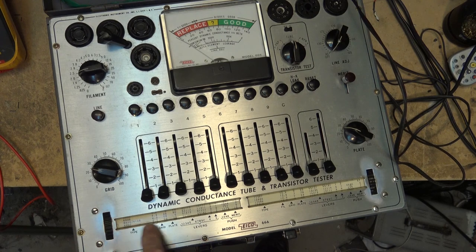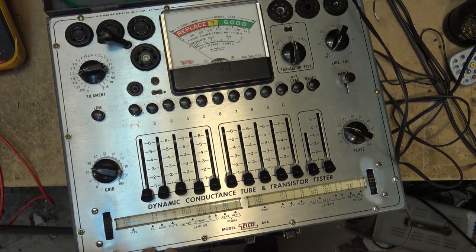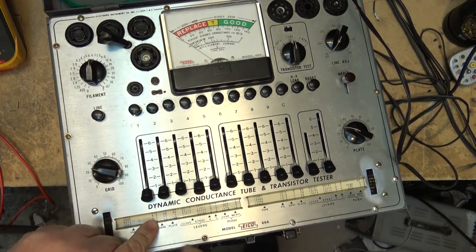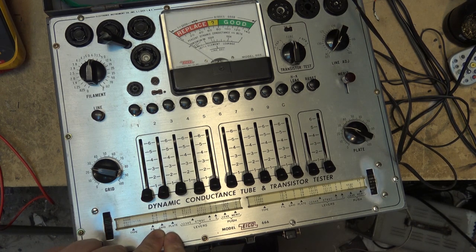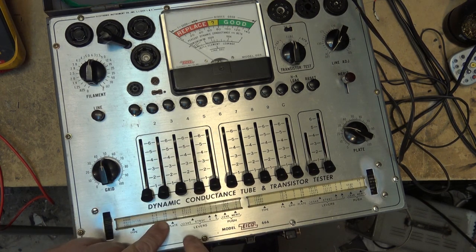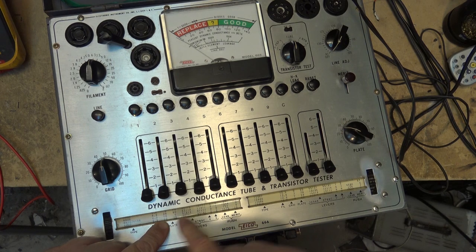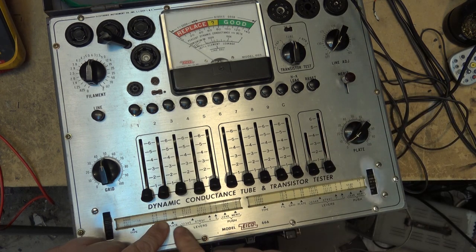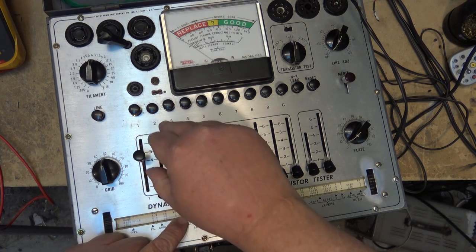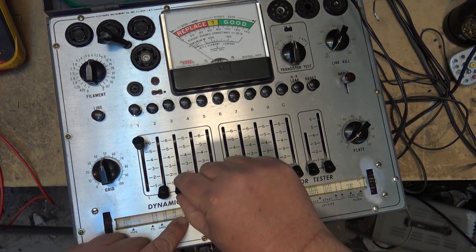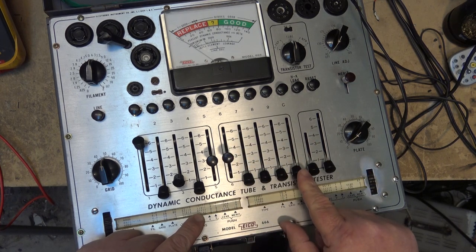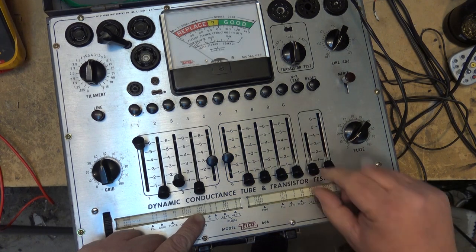6AU6, 6.3 is the filament, so we set the filament to 6.3, and we're going to set the grid to 50. There's the grid set to 50. We're going to set the plate to 5, so we go down here, set the plate down to 5. And we're going to set our levers according to this, so first lever goes to a 5, and then a 1, and then a 2, and then a 1, and then a 3, and then a 3, and then the V and the S are these ones here, which go to a 3 and a 3.